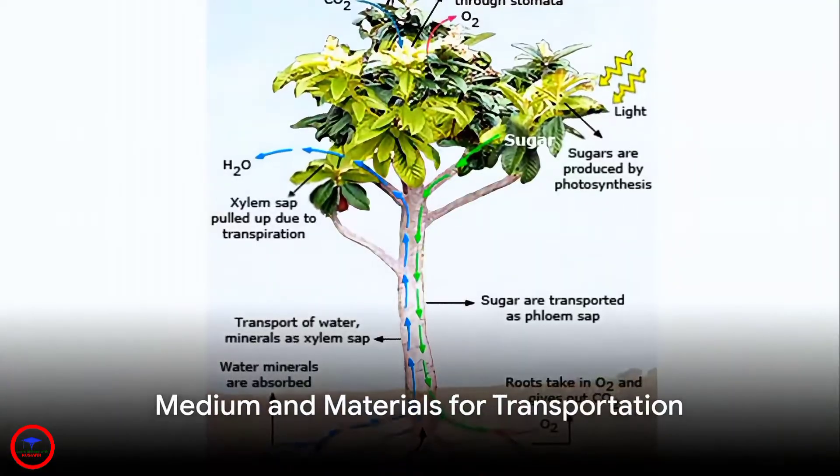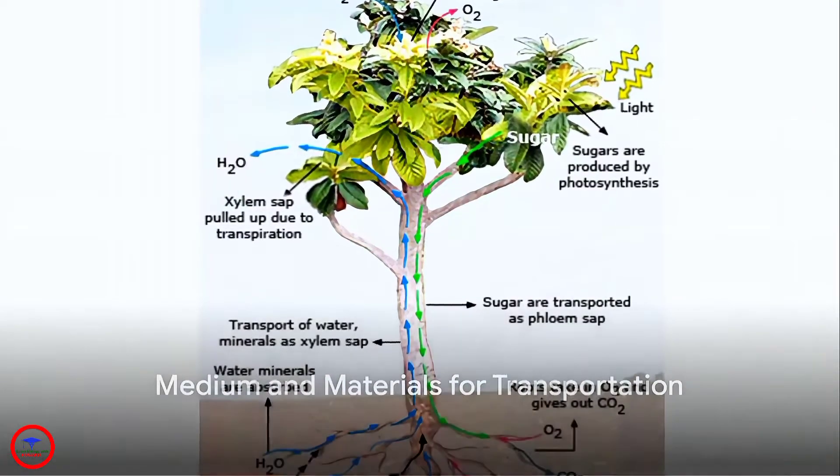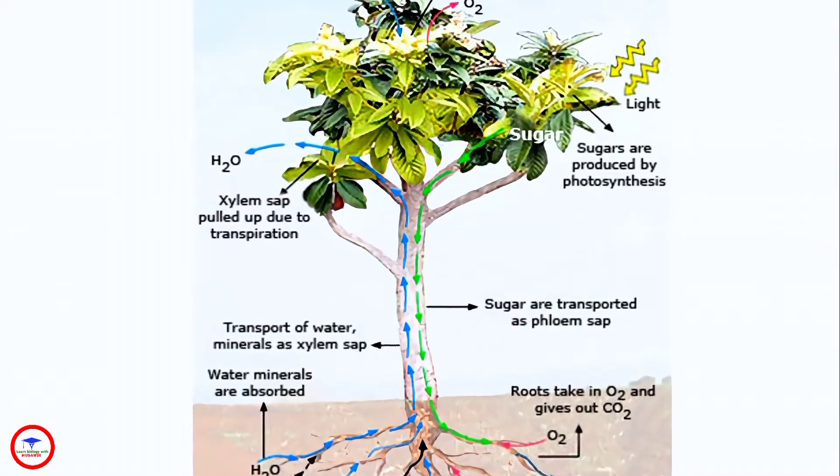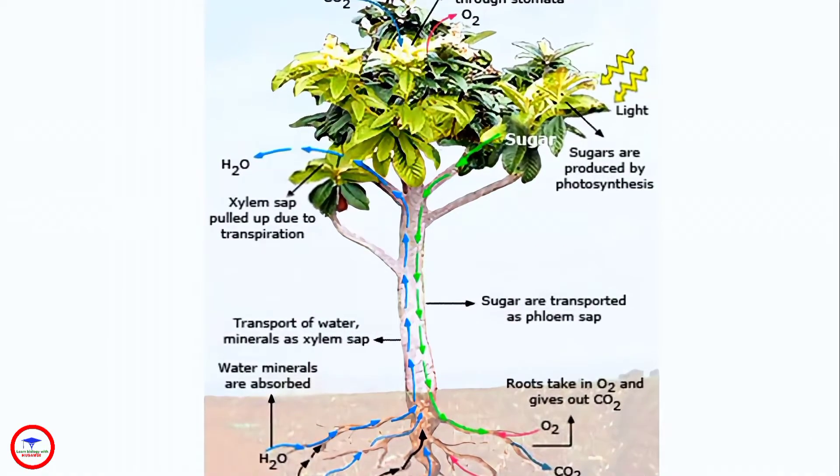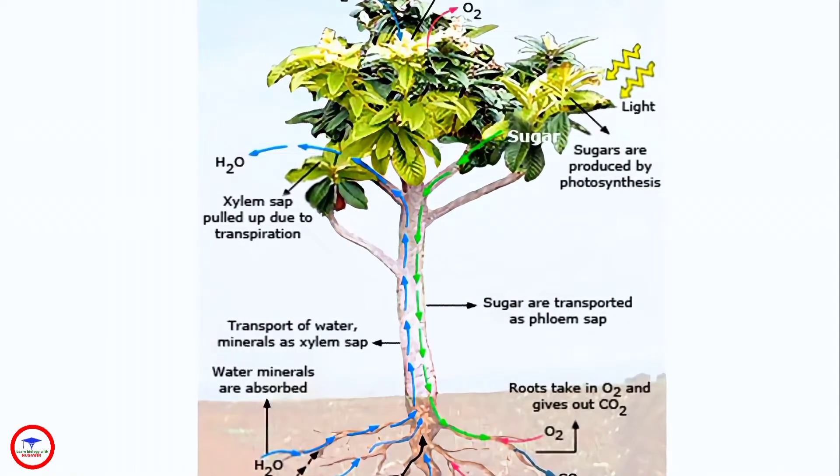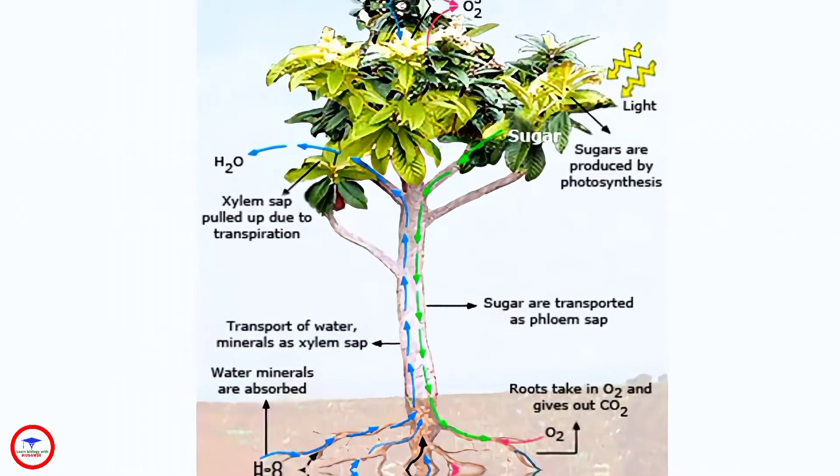Now, what does a plant need for this transportation? It's simple, a medium and materials to transport. The medium is typically water, and the materials include minerals, sugars, and other organic substances.